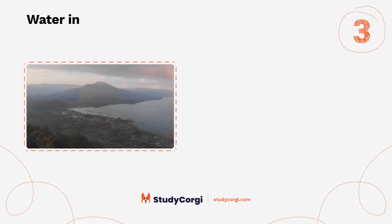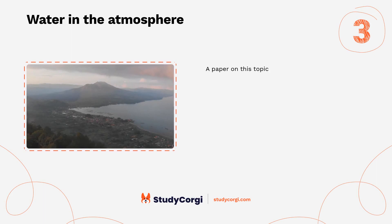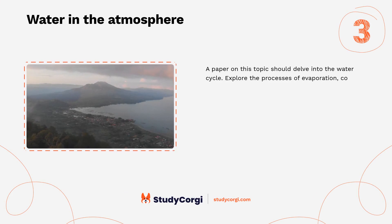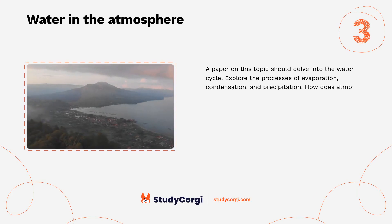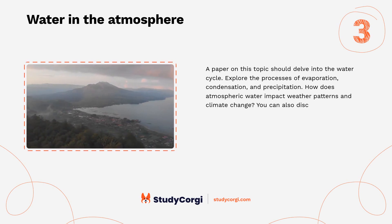Water in the atmosphere. A paper on this topic should delve into the water cycle, exploring the processes of evaporation, condensation, and precipitation. How does atmospheric water impact weather patterns and climate change? You can also discuss its role in Earth's ecosystems.